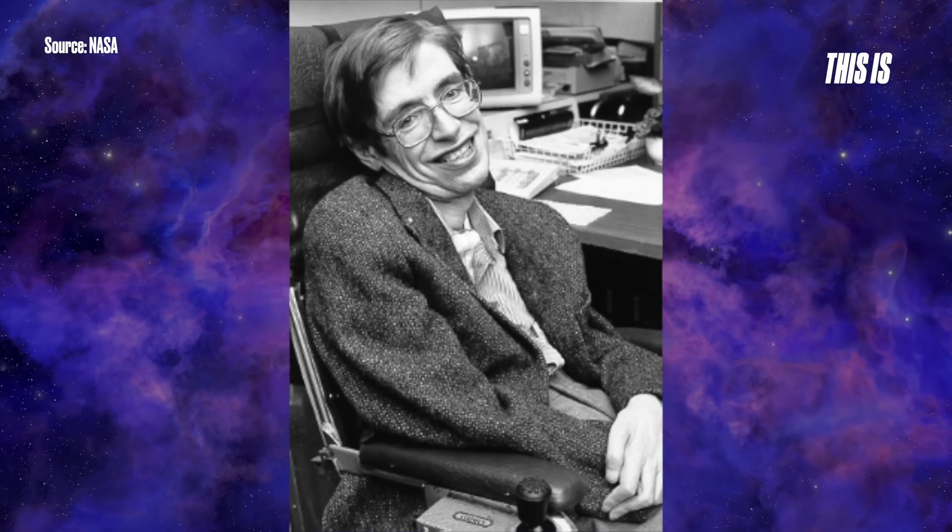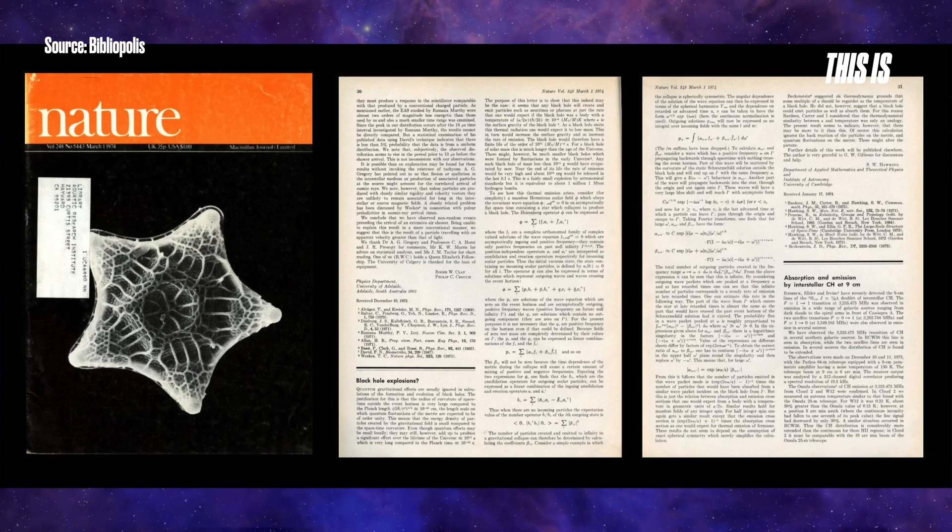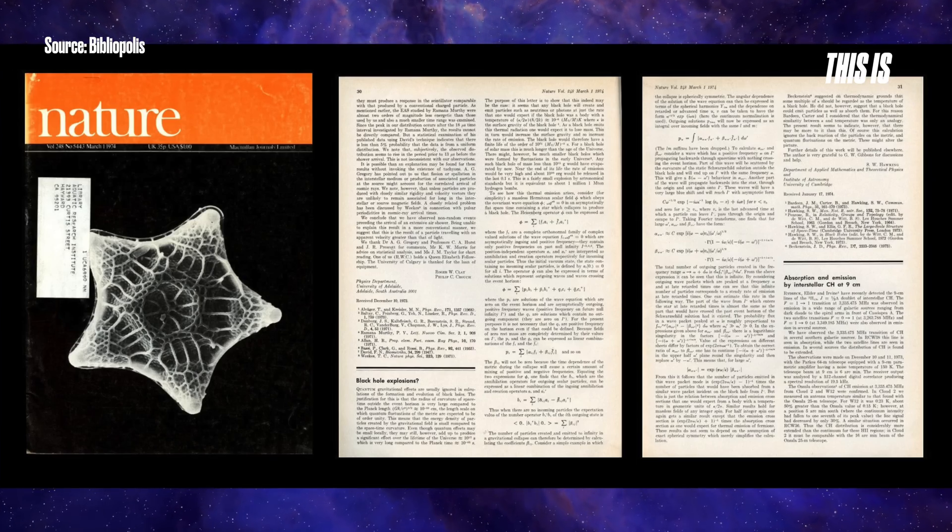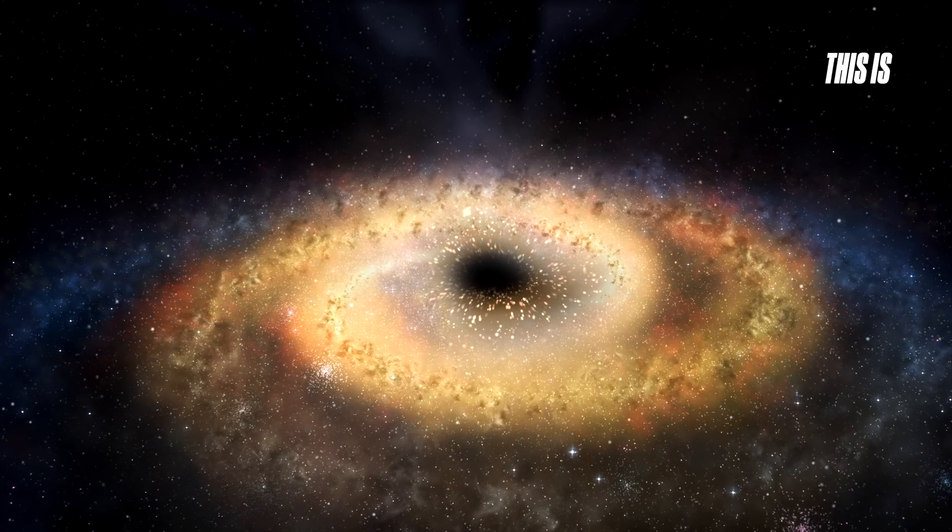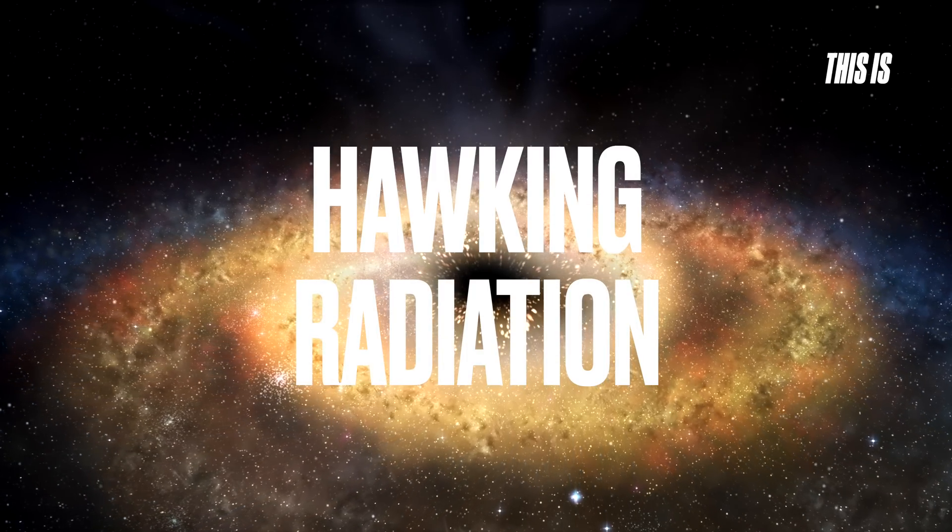In 1974, Stephen Hawking published a paper in Nature titled Black Hole Explosions, in which he proposed that black holes are not entirely black, but instead emit faint thermal radiation, now known as Hawking radiation.